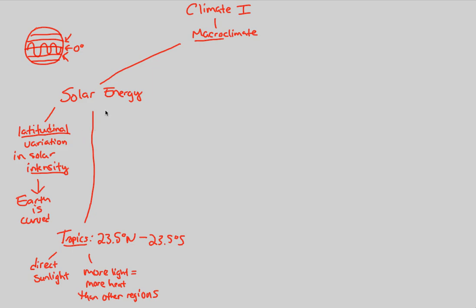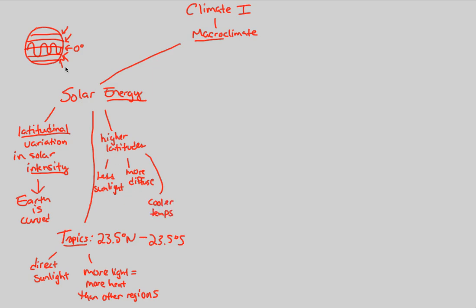If we look at the higher latitudes — the ones that are not the tropics — these higher latitudes will have different macroclimates because they have different solar intensities. Here we would obviously observe less sunlight because we're further away from the direct sunlight that hits the equator. We would have more diffused sunlight — much more spread out, much less direct — and the overall consequence would be cooler temperatures. How far you are from the equator will coincide with the amount of solar energy you receive, which will then coincide with the sunlight and temperatures in that region.